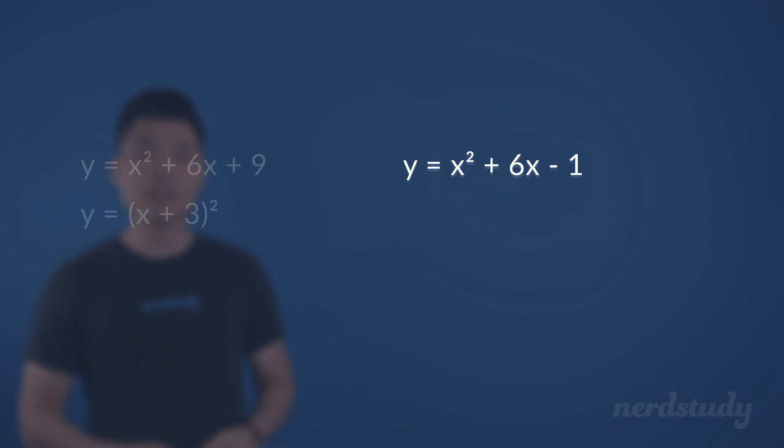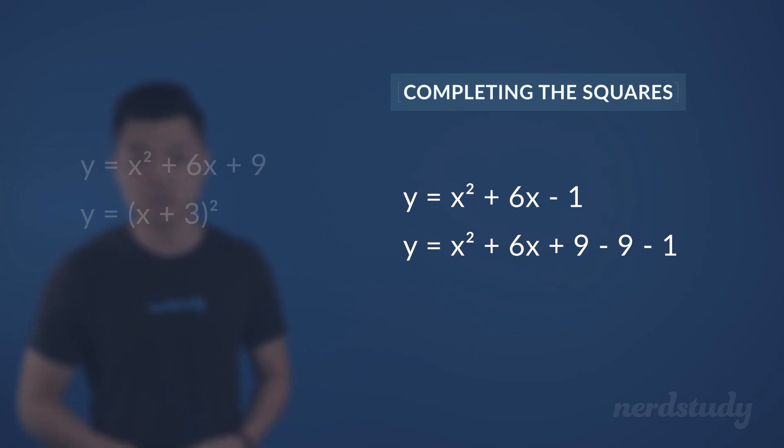Wouldn't you agree that this equation doesn't change at all if we add and subtract by 9? Because after all, this itself would cancel each other out, leaving us with the original equation. So we can do this, and this starts the process of what we call completing the squares. And since you can see the parallel between this part of the equation now and the example we previously did, we know that this part here is a perfect trinomial and that this can be factored easily into this.